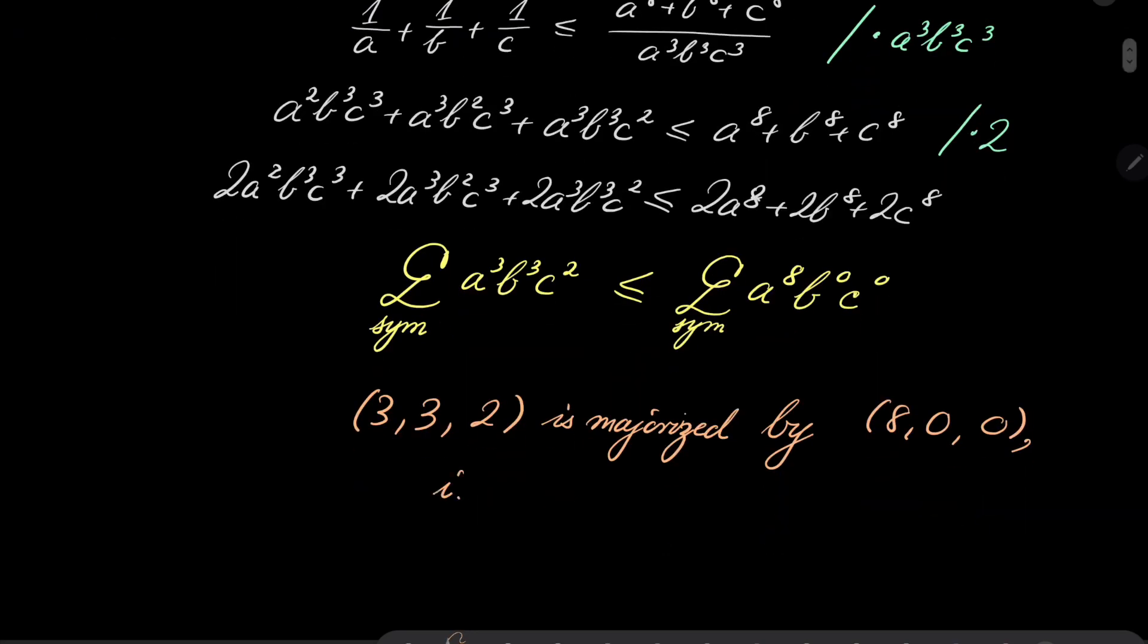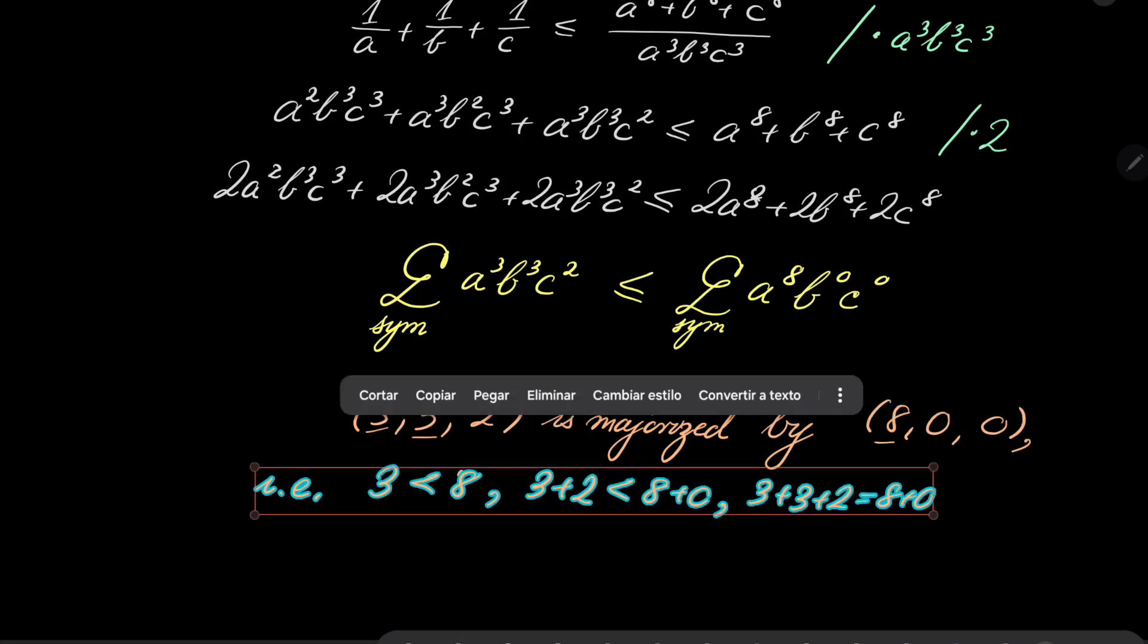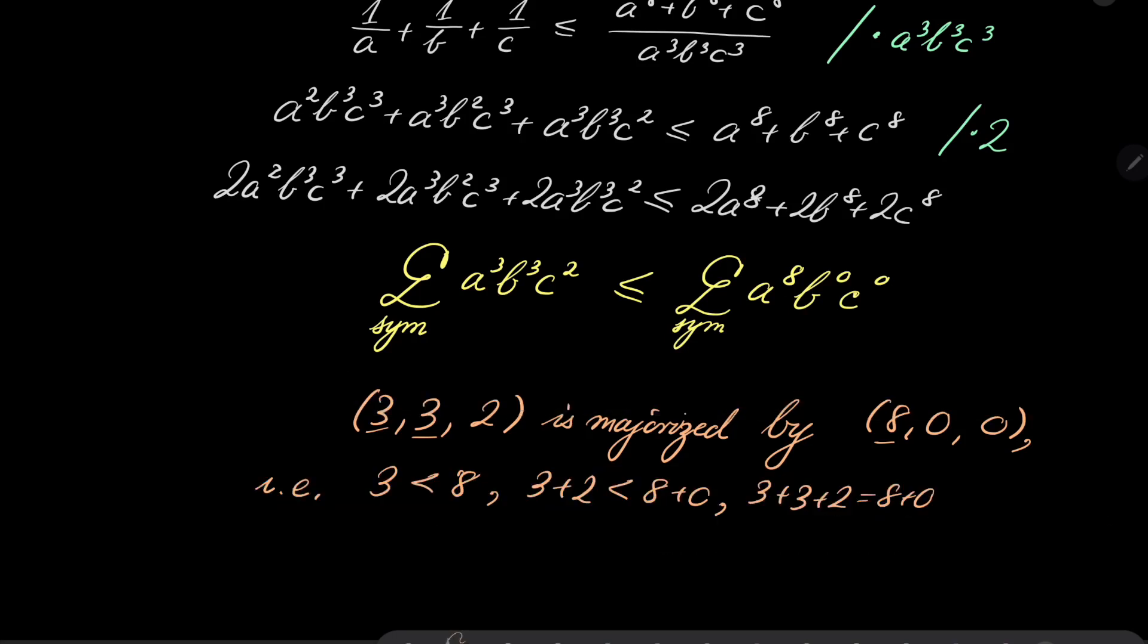What do I mean by that? I.e., the first term 3 is less than 8. Second, sum of the first two terms on the left hand side is less than the sum of first two terms on the right hand side. And finally, the sum of all the terms are the same. If something like that happens, we say that one sequence majorizes the other sequence.